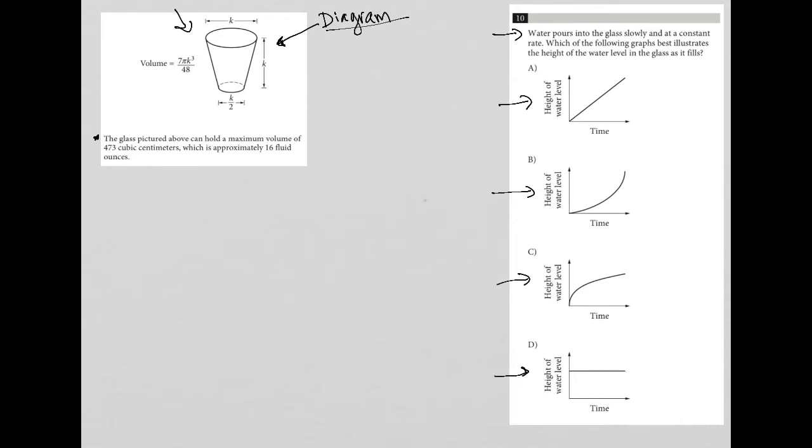They're just telling us how much volume the glass can hold. And if we look at how the glass has been outlined here, we can see that we have a height of k, a diameter for the opening of the glass is also k, a diameter for the bottom of the glass which is k over 2. And then we have this formula for the volume of the glass, which is 7 pi k cubed over 48. So nothing seems too tricky here as of right now. So let's just go on and read what this question is asking us to find.